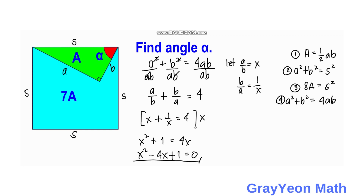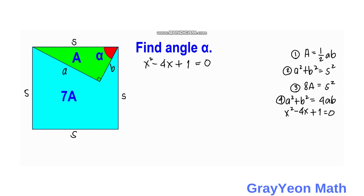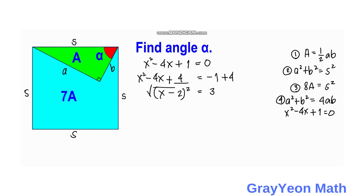We solve this quadratic by completing the square. Starting with X squared minus 4X, we add 4 to both sides, giving us the perfect square X minus 2 squared equals 3. Taking the square root of both sides, X minus 2 equals plus or minus the square root of 3, so X equals 2 plus or minus the square root of 3.